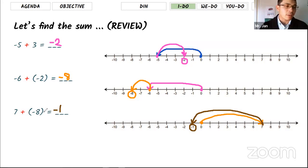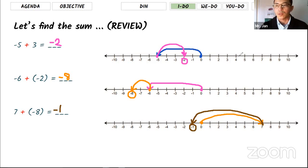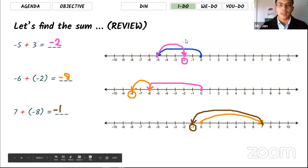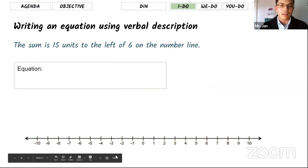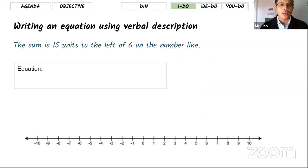That was what we learned last week: adding positive or negative numbers on the number line, where the result is the final destination of the arrows. Today we're going to move on to creating equations using verbal descriptions.